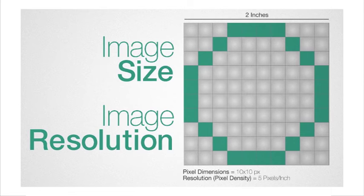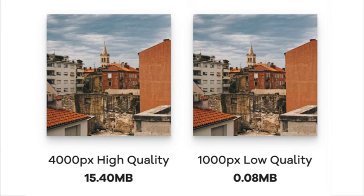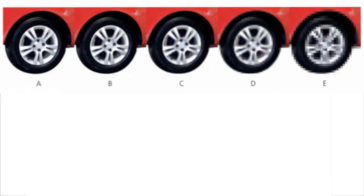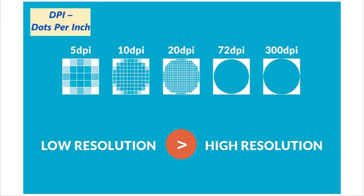Increasing color depth also increases the size of the file when storing an image. Image resolution refers to the number of pixels that make up an image. For example, an image could contain 4096 by 3072 pixels, which is 12,582,912 pixels in total. The resolution can be varied on many cameras before taking a digital photograph. Photographs with a lower resolution have less detail than those with a higher resolution. Image A has the highest resolution and image E has the lowest resolution. Image E has become pixelated and fuzzy, because there are fewer pixels to represent the image. The main drawback of using higher resolution images is the increase in file size — as the number of pixels increases, the file size also increases.